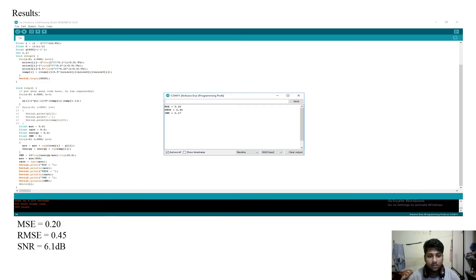And in this case we can see that we are getting the MSE, RMSE and SNR value. And we got a very good value of MSE as 0.2, RMSE as 0.5 and SNR value of 6.17 dB.